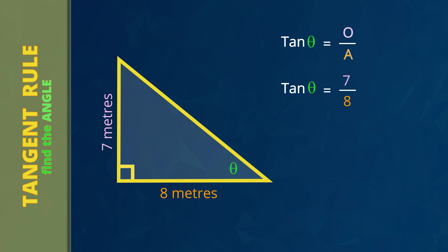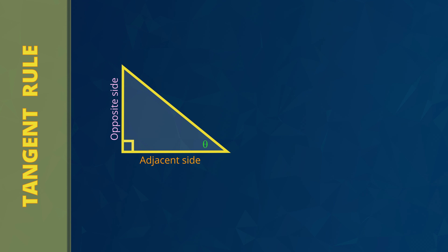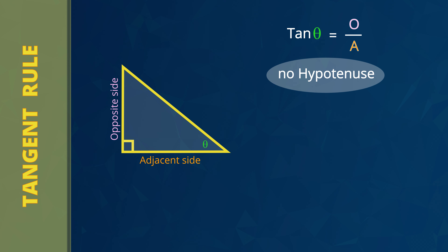Let's do another example to find the size of the angle marked theta. We already know the opposite side is 7 meters and the adjacent side is 8 meters. Tan theta equals opposite side divided by adjacent side. Because we are trying to find the size of the angle, the unknown thing is theta. The opposite side is 7 and the adjacent side is 8. We are working in reverse to find the angle, so we press shift before pressing the tan button. We type shift tan open parentheses 7 divided by 8 close parentheses. The answer is 41.2 degrees.